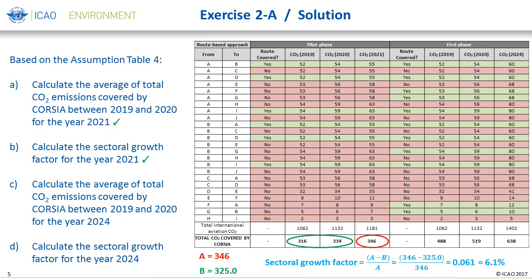The remainder A minus B is divided by total CO2 emissions covered by CORSIA in a given year, or letter A. This value is then multiplied by 100 to denote a percentage. In this illustrative example, the sectoral growth rate for 2021 is 346 minus 325 divided by 346, which is 0.061 or 6.1 percent.